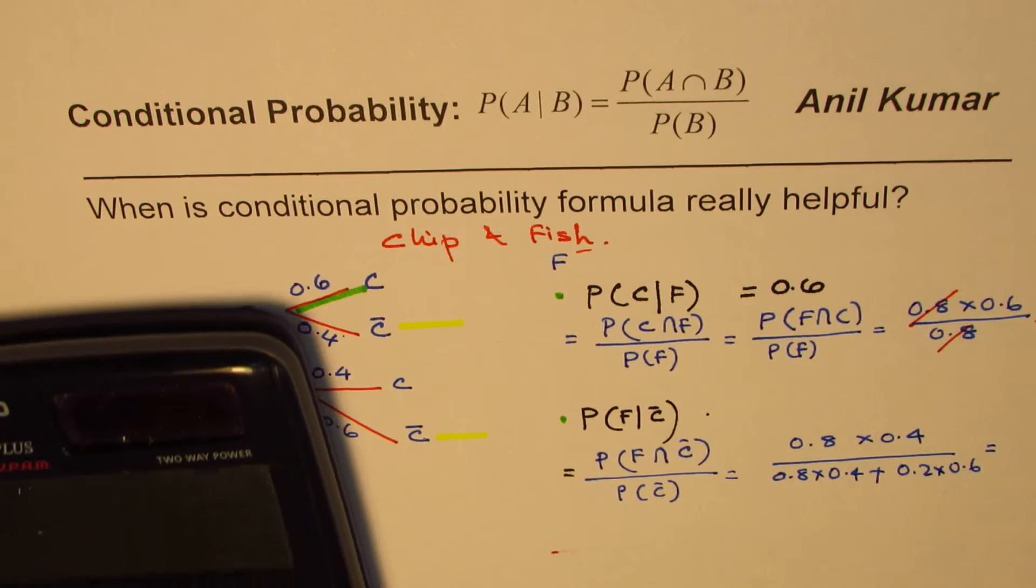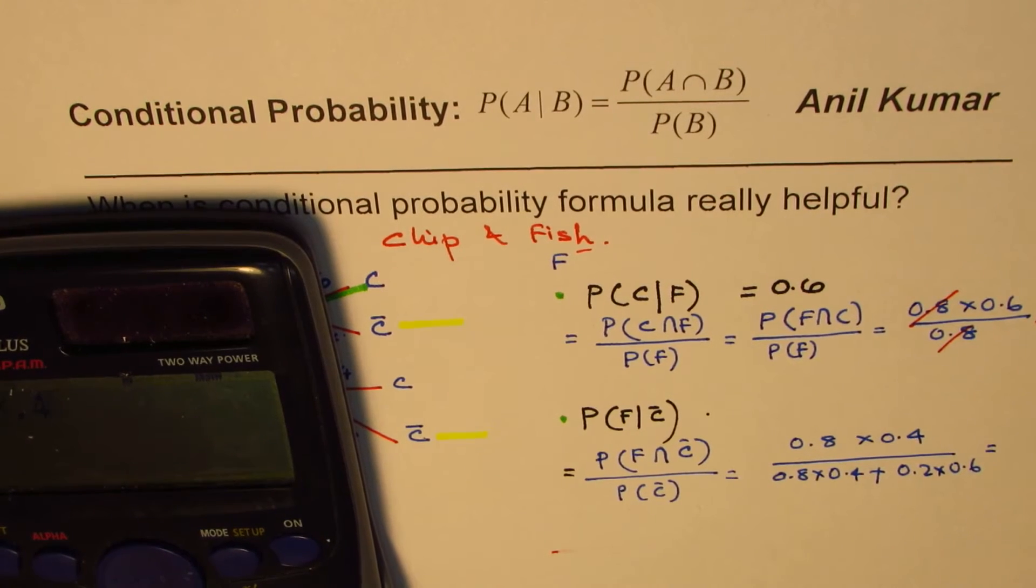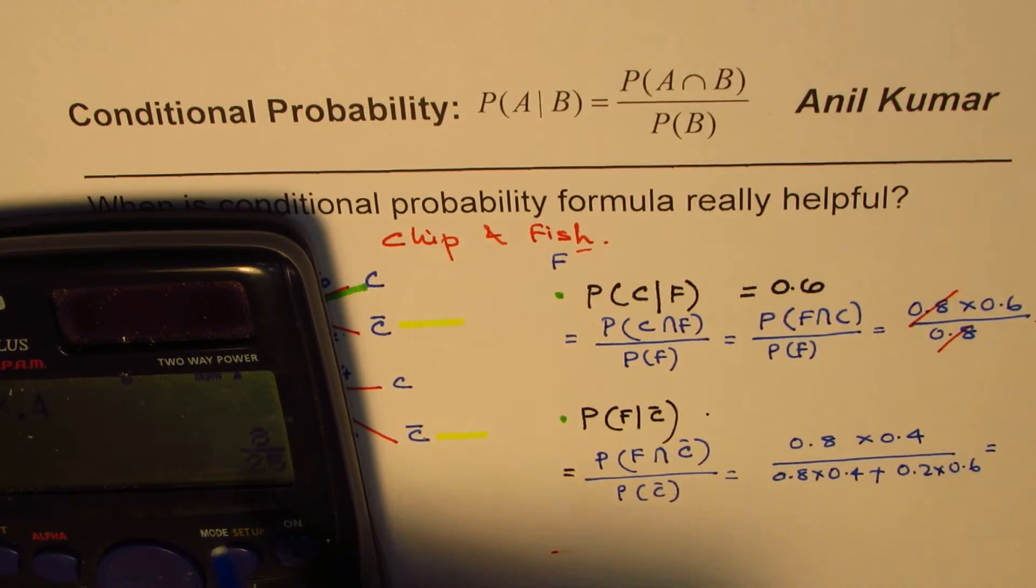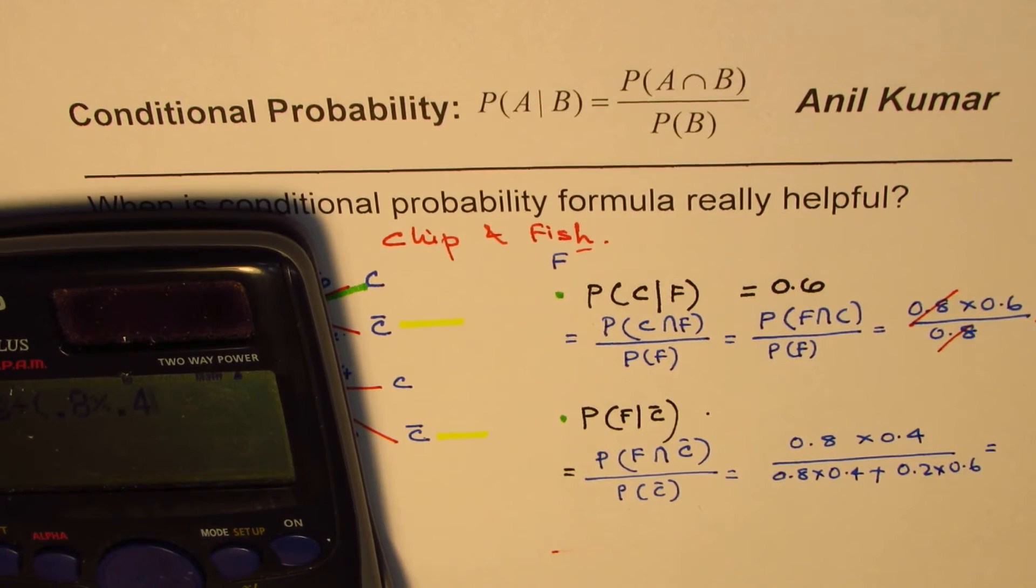So that gives you the probability of a customer ordering for fish and knowing fully well that that customer is not taking chips. So we get 0.32, let me do this, 0.8 times 0.4, equals to, that's 0.32, divided by, within brackets, we'll divide by this, so which is 0.8 times 0.4, plus 0.2, times 0.6, bracket close, equals to, and in, well...